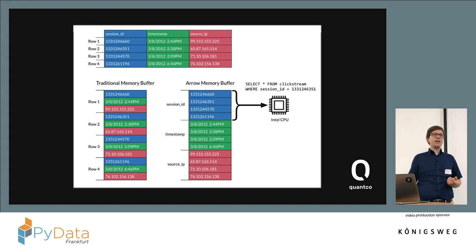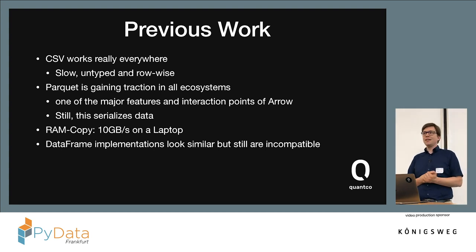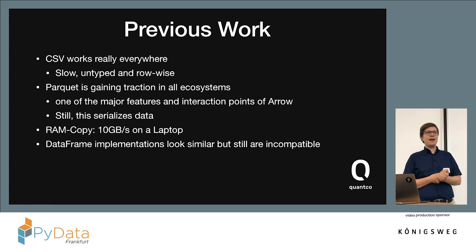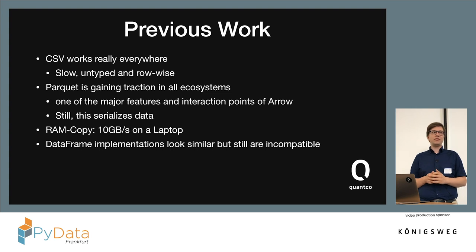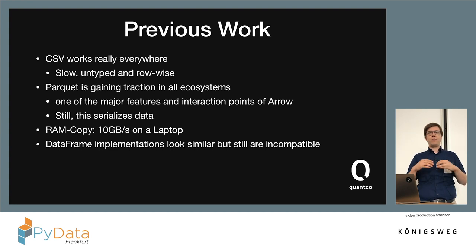Now, there are already solutions for connecting data systems together with some kind of standard, but they have unfortunate effects. Everyone knows that every system can import and export CSV files, and CSV always works — people invest a lot in making CSV fast. But in the end, CSV is human-readable, which also means it's not good for machines. That makes it slow — it could be a lot faster — and it's row-wise, so it doesn't match how we want to represent data in memory.